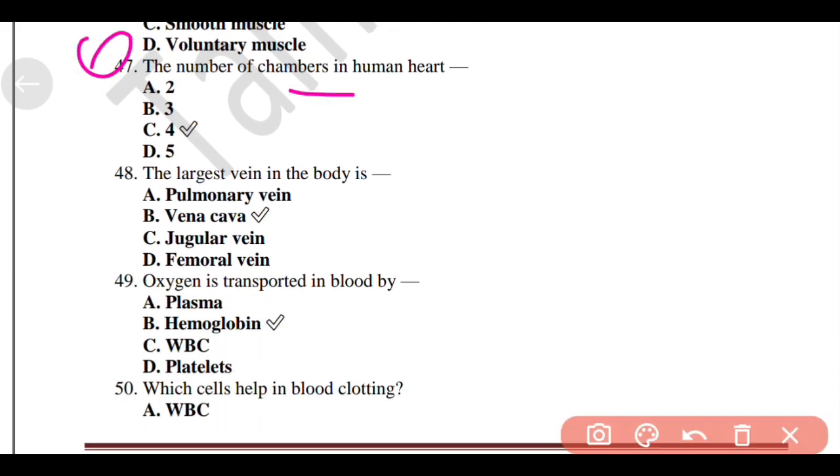The number of chambers in human heart, Option C, 4. The largest vein in the body is option B, Vena cava.